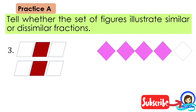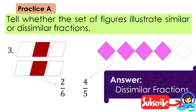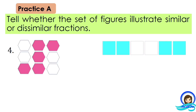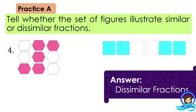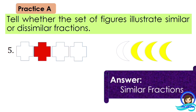Number 3 — Answer: dissimilar fractions. The first set is 2 and 1/6, while the second set is 4 and 1/5. Number 4 — Answer: dissimilar fractions. The first set is 5/9, while the second set is 4/6. Number 5 — Answer: similar fractions. The first set is 1 and 1/4, while the second set is 3/4.